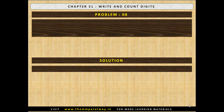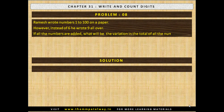Problem No. 8: Ramesh wrote numbers 1 to 100 on a paper. However, instead of 6, he wrote 9 all over. If all the numbers are added, what will be the variation in the total of all the numbers? Now stop the video and find the solution. The solution follows: there will be a variation of 330 in total — 30 in the unit column and 300 in the tens column.